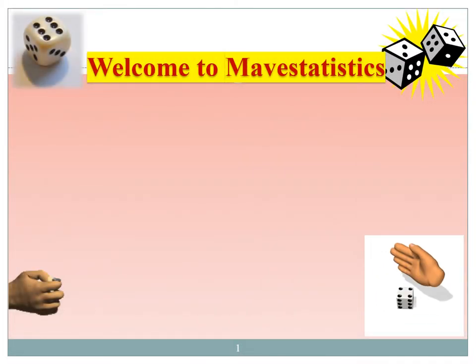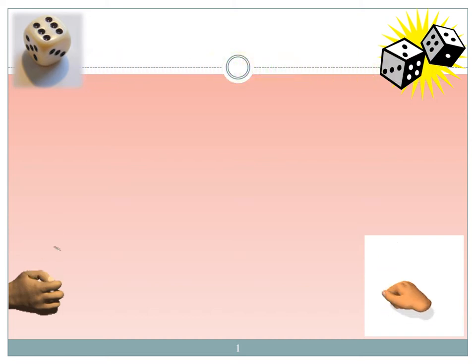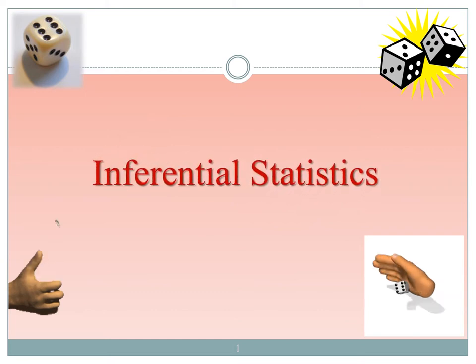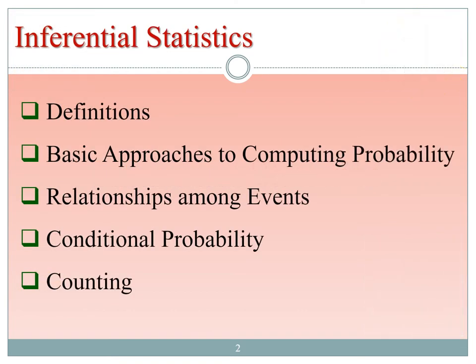Today we are going to discuss inferential statistics. This is a third section video. We will cover: first, some definitions; second, basic approaches to computing probabilities; third, relationships among events, explained using Venn diagrams; fourth, conditional probability and its applications; and fifth, Bayes' theorem. Finally, we will use the counting principle for probability calculations.